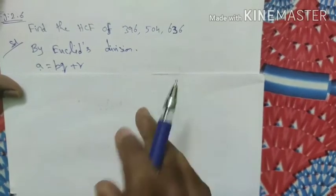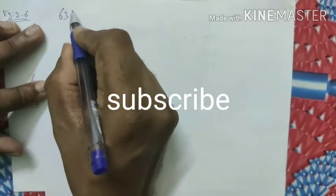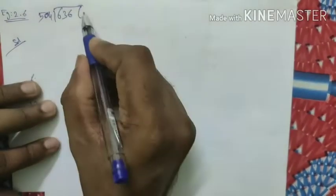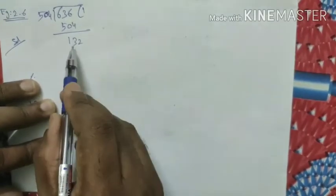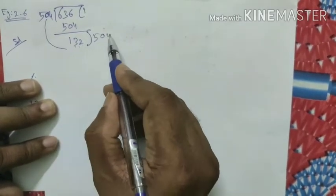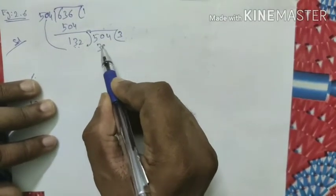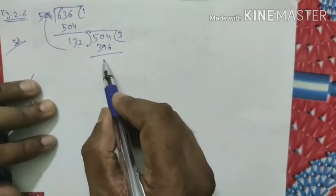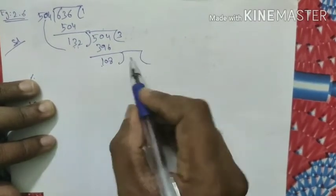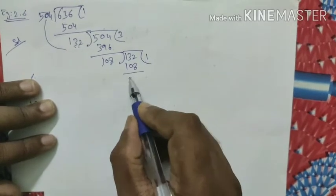I choose the two biggest numbers: 636 and 504. 636 divided by 504 gives quotient 1, and when we subtract we get remainder 132. Still not zero, so now 504 is divided by 132. That gives 3 times: 3 times 132 is 396. Subtracting, we get remainder 108.